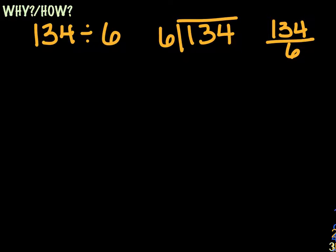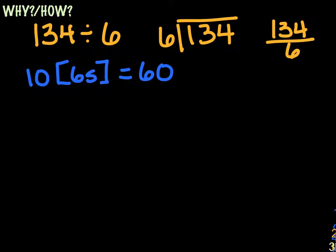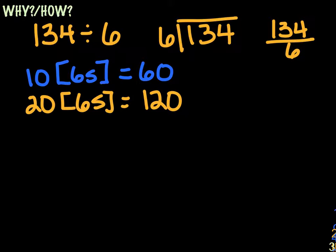So I ask myself: are there at least 10 multiples of 6 in 134? The answer would be yes, because 10 sixes equals 60. What about 20 sixes? The answer to that question would be yes, because 20 times 6 equals 120. What about 30 sixes? 30 times 6 would be 180, and we cannot go bigger than the number that we're dividing into, so 30 would not work.